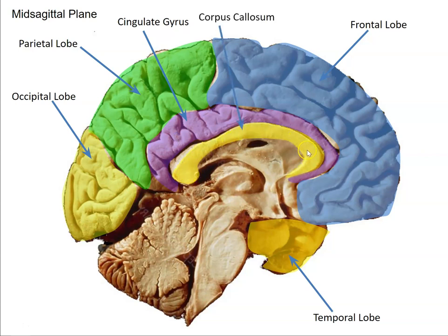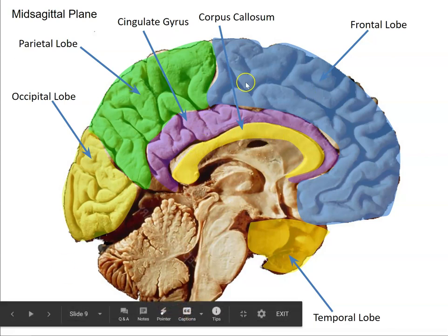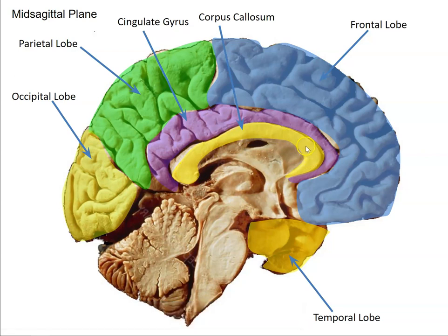Here we have the corpus callosum — a massive white matter tract of about 100 million axons connecting the gray matter of the left hemisphere with the gray matter of the right hemisphere. It's kind of an information superhighway that allows the left and right hemispheres to stay connected with one another, transferring information with very little delay as a result of the corpus callosum.